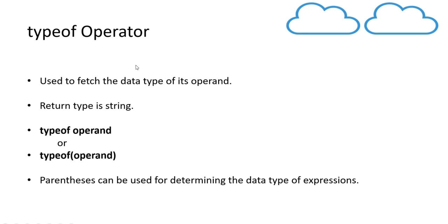The typeof operator is used to fetch the data type of its operand. The return type when we apply typeof on a particular operand is always string. There are two syntax options: typeof space operand, or typeof with the operand inside parentheses. The parenthesis approach is used when we want to determine the data type of certain expressions.